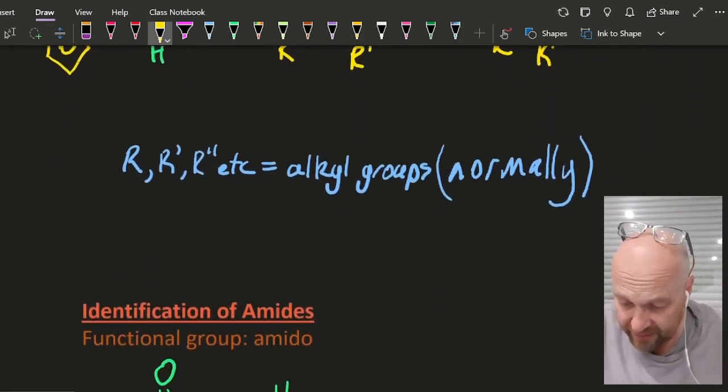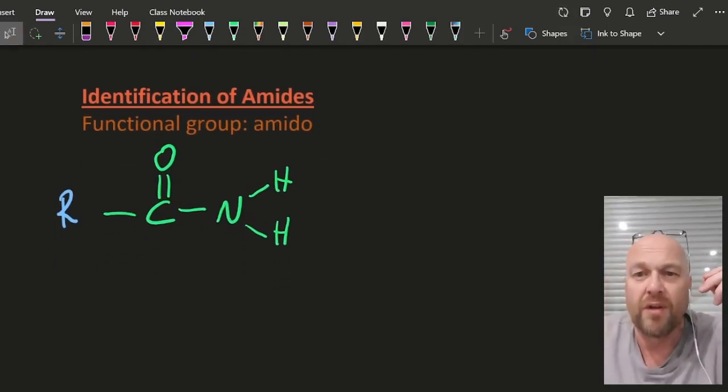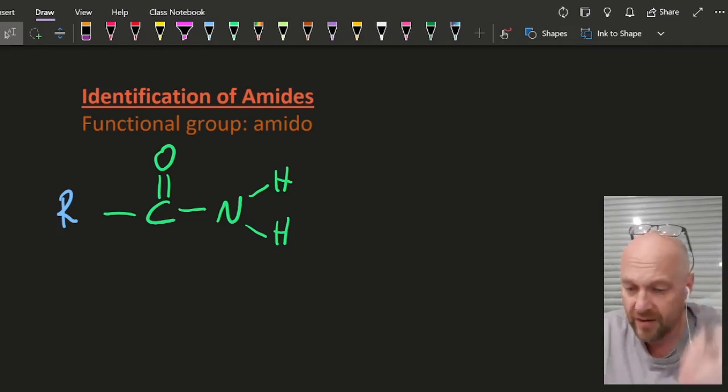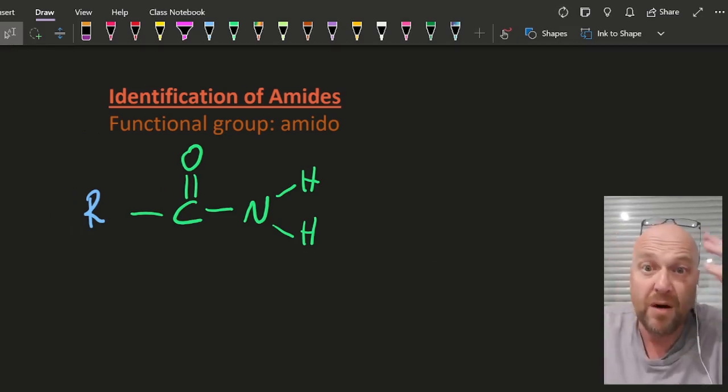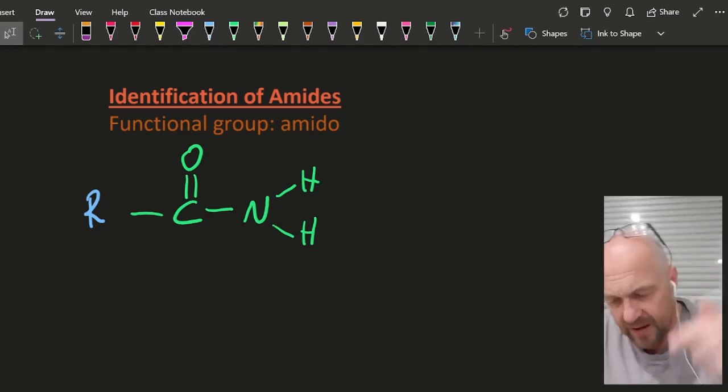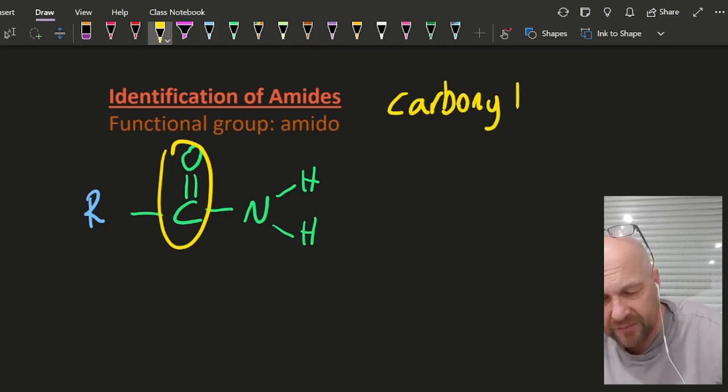Next up is the amides. So that's the amido group or the amido group, depending on how you want to pronounce it. These have no smell, unlike the smelly amines. What could they ask you about here? Well, I can see that there's a carbonyl group there. Sometimes they ask you about that. And I can see there's potential for hydrogen bondings coming off.